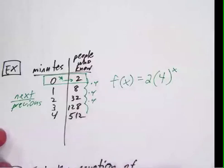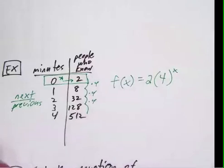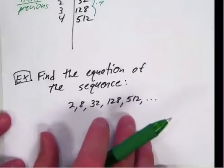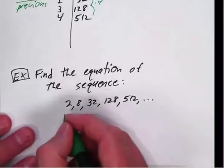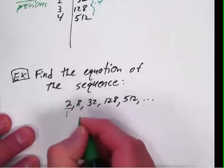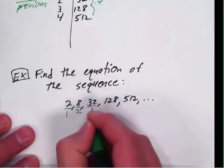Now, in comparison of that to the number sequence, if we were to take a look at just a plain old sequence, it says find the equation of the sequence. Well the difference is that a sequence starts at term 1, this is term 2, term 3, and so on.